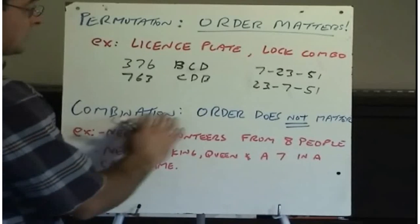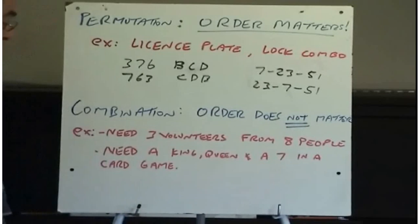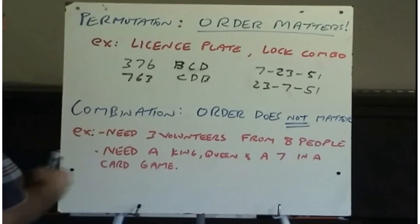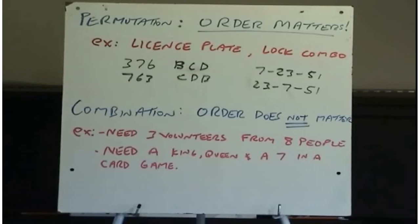In a combination, that would not matter. So an example would be, if out of eight people, I needed three volunteers for a project, it wouldn't matter who I chose first, second, or third. I just need three volunteers. Or another example of a combination would be, I'm playing a game of cards, and I need a king, a queen, and a seven. It wouldn't matter whether I got the king first, then the queen, and then the seven, or if I was handed a seven, a king, and then the queen.